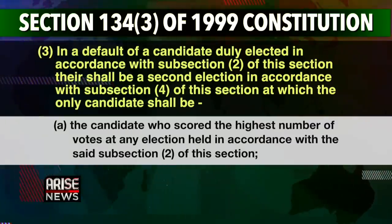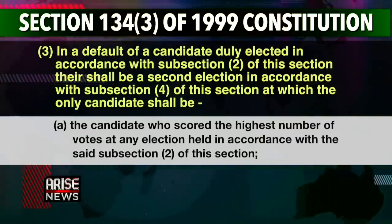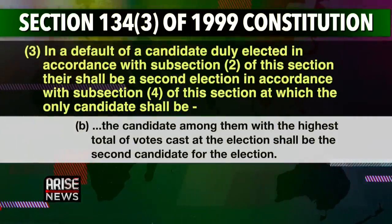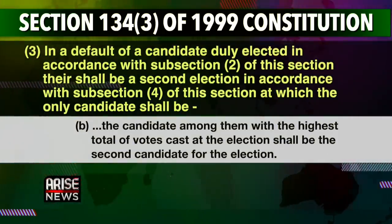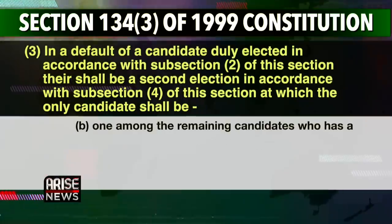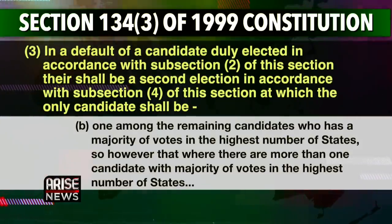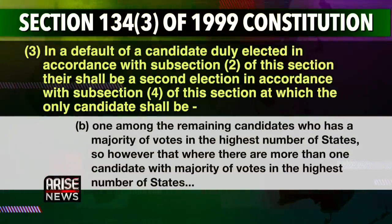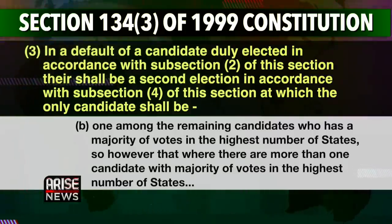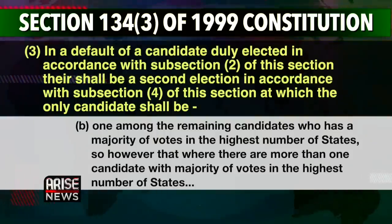The Constitution seems to have provided for that under Section 134. Assuming the tribunal comes to the decision that the election has to be invalidated, then the tribunal may order another election. Or if it's because nobody won — nobody got the required numbers to win — based on the evidence they have, then they're going to do a runoff. The question is, how do we select who will do the runoff? The Constitution, Section 134-3, is clear for a runoff.